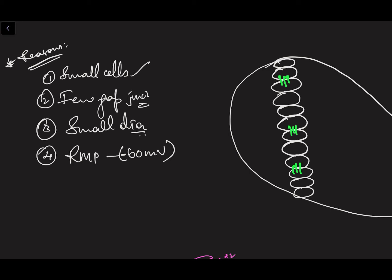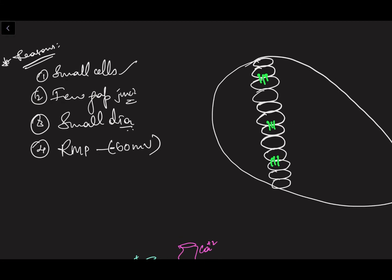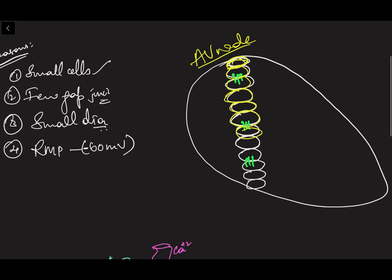The first reason is small cells. The AV node is made up of specialized myocardial cells. Both the SA node and AV node have specialized myocardial cells. In the AV node, these cells are arranged close to each other and are pretty small. As shown in this schematic diagram of the AV node, the close arrangement means current needs to cross a lot of cell membranes, which decreases its speed.